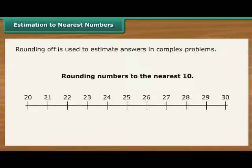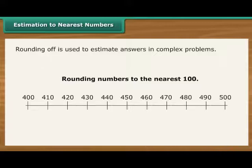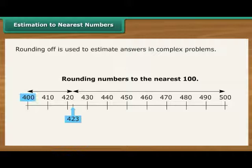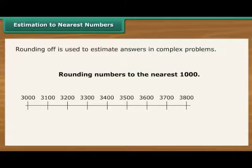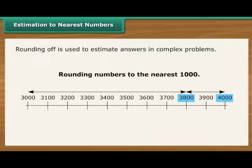Rounding numbers to the nearest ten means finding which ten they are nearest to. For example, 23 rounded to the nearest ten is 20. Rounding numbers to the nearest hundred means finding which hundred they are nearest to. For example, 423 rounded to the nearest hundred is 400. Rounding numbers to the nearest thousand means finding which thousand they are nearest to. For example, 3,800 rounded to the nearest thousand is 4,000.